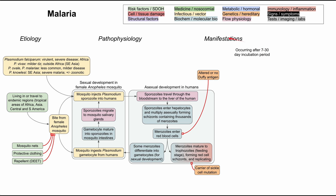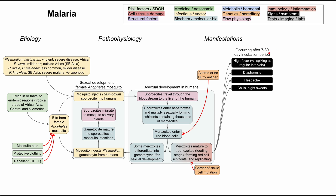Now let's talk about the manifestations of malaria. These tend to occur 7 to 30 days after the person has been bitten by a mosquito. So if somebody returns from a trip and presents with symptoms only three days later, you'd know it's not malaria — this incubation period is required for the parasite to spread throughout the body. Malaria typically causes a very high fever that spikes at regular intervals.